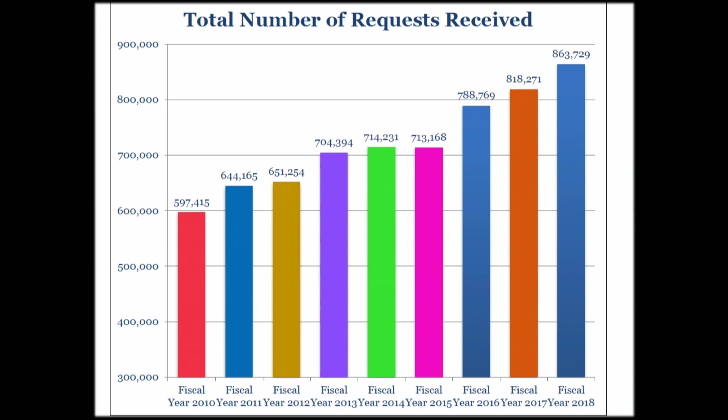This is what FOIA looks like government-wide. These are the 2018 numbers — approaching 900,000 FOIA requests government-wide. That's a lot of requests, and these can range from short things like 'give me the emails that John Smith wrote about Jane Smith in this time period,' to 'give me everything that Secretary A wrote about this topic,' which can be incredibly expansive. The expectation in the field is that these will crest over a million once we compile all the FY19 materials.